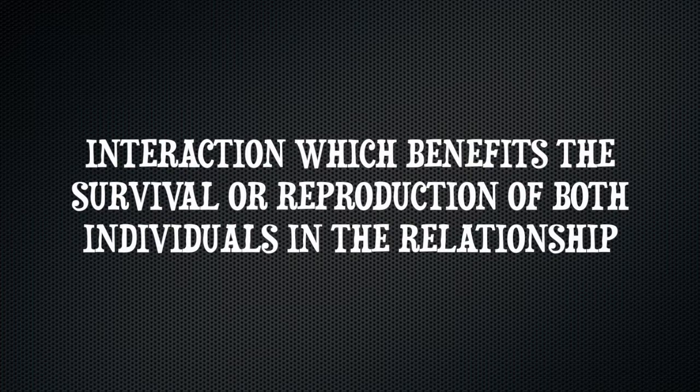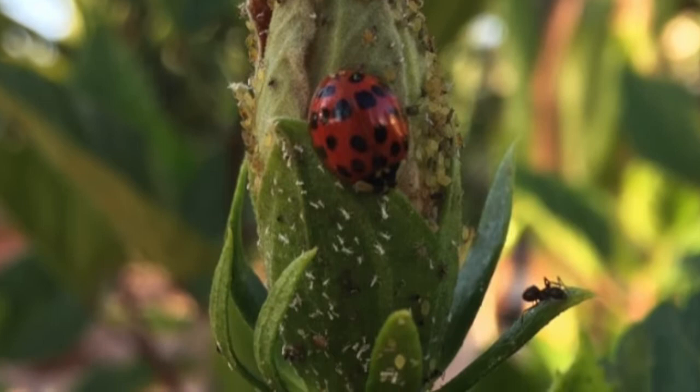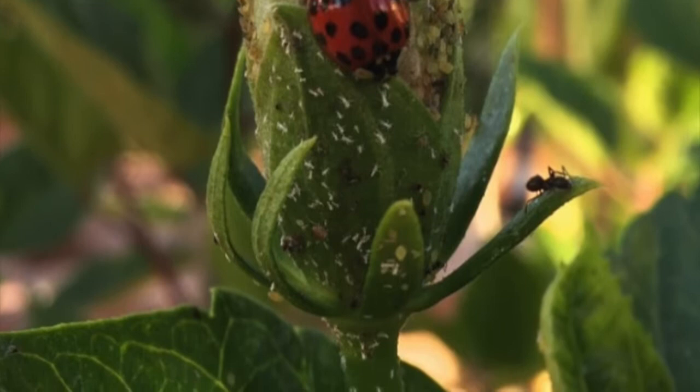This picture I took in my backyard shows how the effects of mutualism exist even on a much smaller scale, and how each partner in a mutualistic relationship can receive multiple benefits. So let's examine the interactions between the hibiscus flower, the aphids, the ladybug, and the ants.